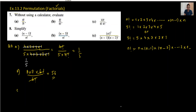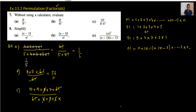Moving to Part C: we have 10 factorial divided by 6 factorial times 4 factorial. So in the numerator we write 10 times 9 times 8 times 7 times 6 factorial, divided by 6 factorial times 4 times 3 times 2 times 1. The 6 factorial cancels out, then we simplify further and the answer comes to 210.